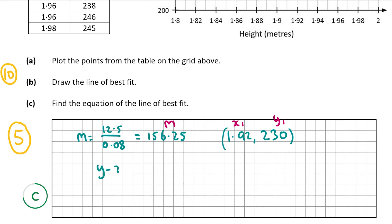So I'm going to get y minus 230 is equal to 156.25 multiplied by x minus 1.92. So that's y minus 230 is equal to 156.25x minus 300. Adding 230 to both sides and we get y is equal to 156.25x minus 70. So that's the equation of our line of best fit. Now of course yours might be slightly different so don't worry if it is as long as it's not too different to that.